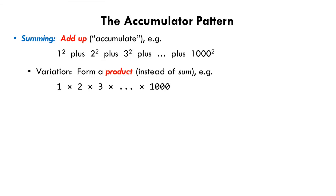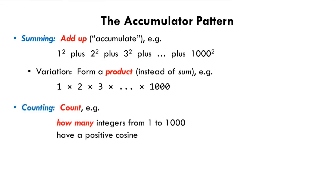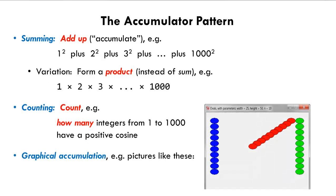Another version of the accumulator pattern is counting, for example to count how many of the integers from 1 to 1000 have a positive cosine. Yet another version of the accumulator pattern is in drawing graphical patterns where shapes are translated, as in the examples shown here. Let's review the summing form of the accumulator pattern, and then we'll look more closely at the counting and graphical accumulation forms.